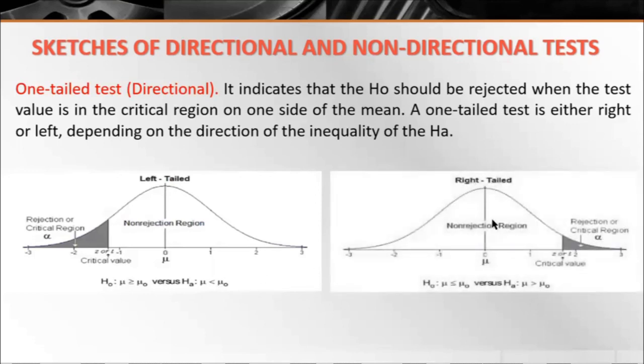Contrary to that, for right-tailed, the shaded region is on the right. The non-direction or non-rejection is the unshaded region.